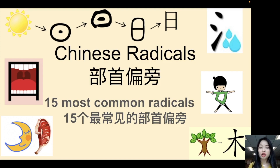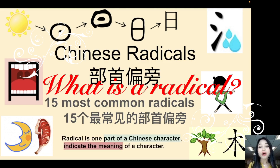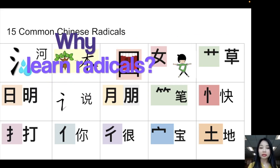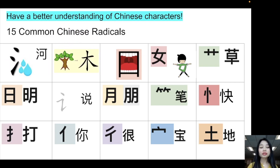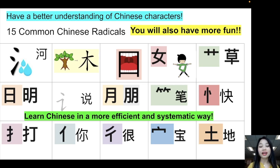十五个最常见的部首 — 15 radicals. So what is a radical? A radical is a part of a Chinese character that indicates the meaning of a character. Today we're going to learn 15 common Chinese radicals. Why do we need to know radicals? Because if you know the radicals, you will have a better understanding of all Chinese characters — how they were created — and you can learn Chinese in a more efficient and systematic way. You'll also have more fun learning. Talk no more, let's quickly get started.